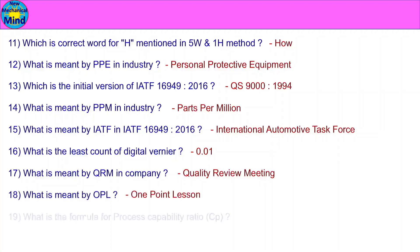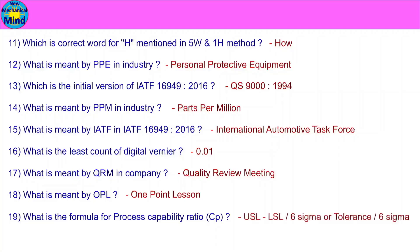What is the formula for process capability ratio CP? The formula for CP is: USL minus LSL divided by Six Sigma, or Tolerance divided by Six Sigma.